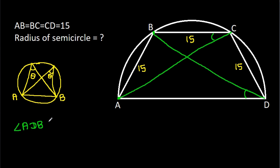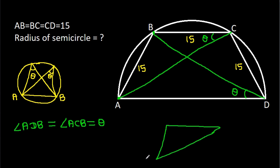Angle ADB equals angle ACB — let's call this theta. Now in triangle ABC, we have AB equal to BC, that is 15. So these two angles will be equal, making this angle also theta. And from chord BC, angle BAC is theta.